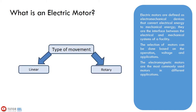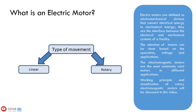Another type of classification is based on movement type, that is linear and rotary motors. The working principle and classification of rotary electromagnetic motors will be discussed in this video.